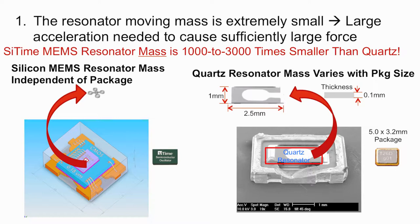Since force equals mass times acceleration, the force resulting from a given acceleration will be 1/1000th to 1/3000th for a MEMS resonator relative to a quartz resonator.